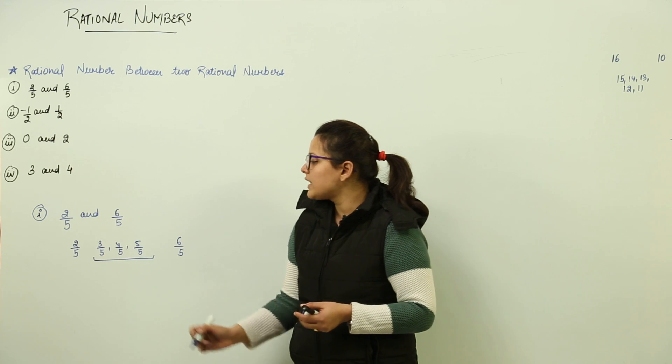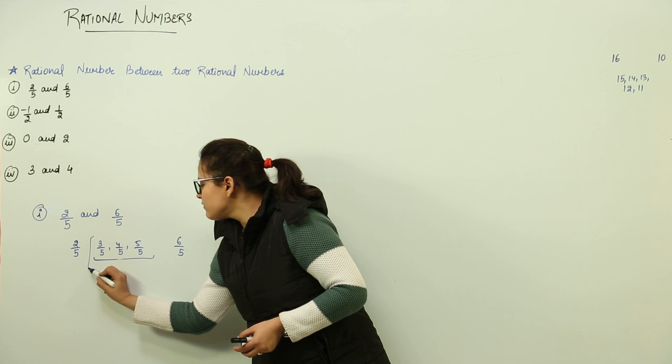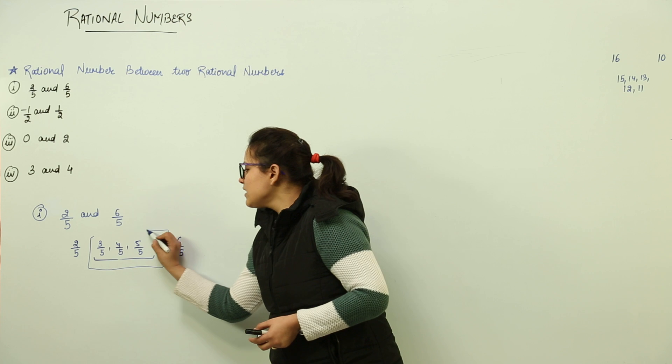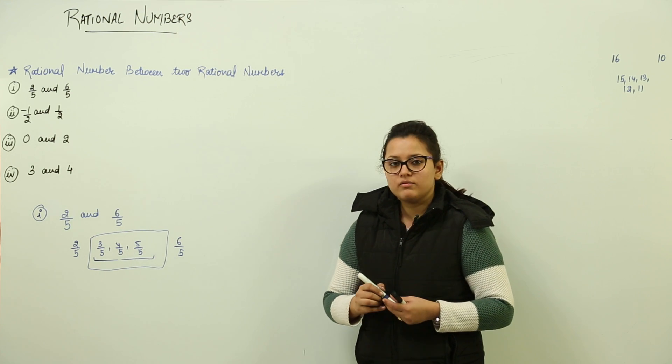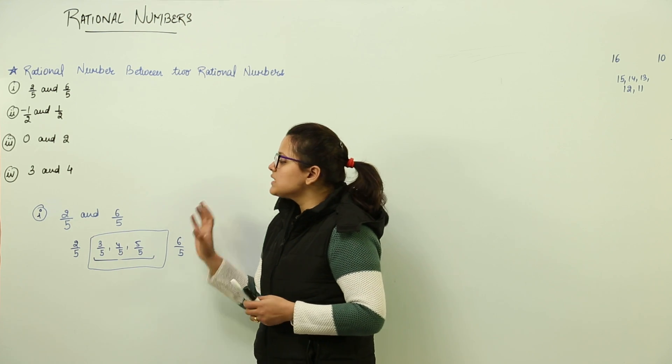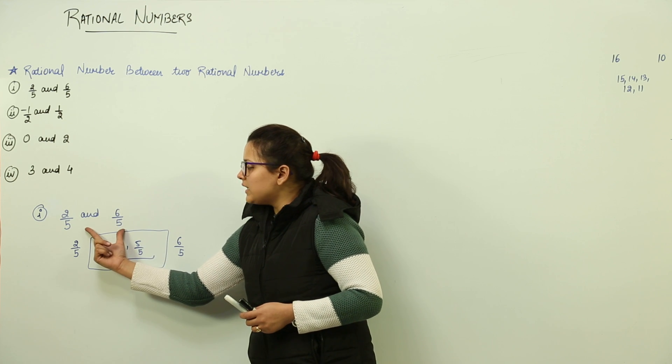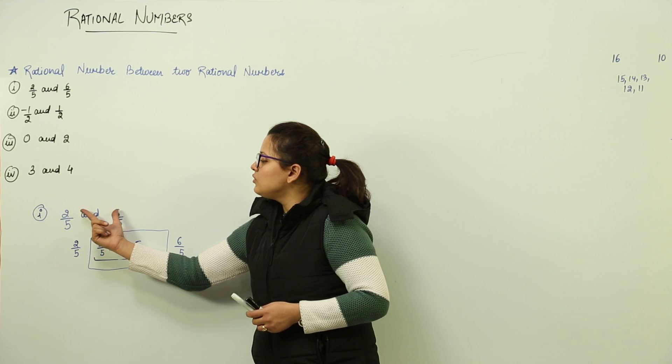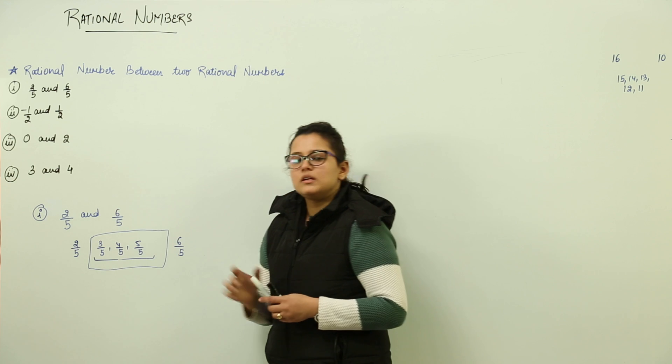So what are my rational numbers lying between two by five and six by five? Three by five, four by five and five by five. So this was the case when denominators are same and numerators have some difference between them.